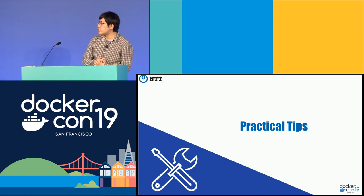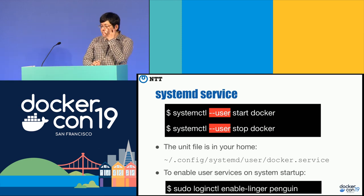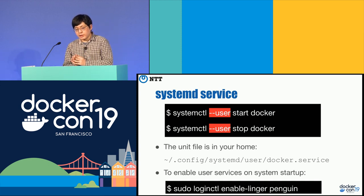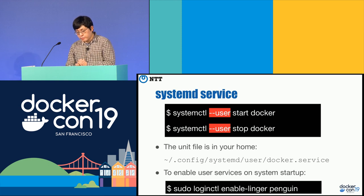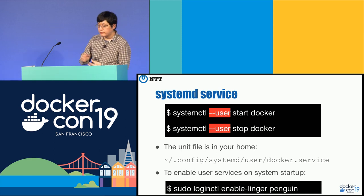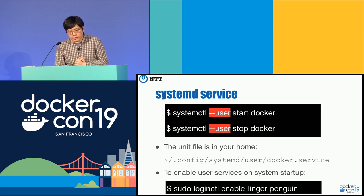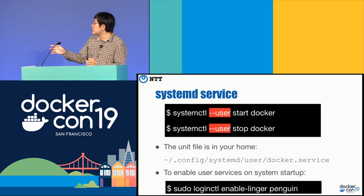There are some practical tips for using rootless Docker. For managing the service, you can use systemctl just like root-full Docker, but you need to append --user to systemctl because we connect to the user instance of systemd. The systemd unit files are in your home directory under ~/.config/systemd/user/docker.service, not in /lib/systemd. To start Docker daemon on system startup, you also need to enable it with loginctl enable-linger.